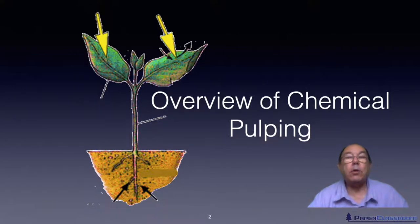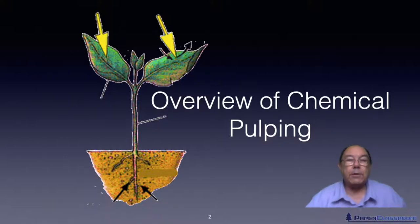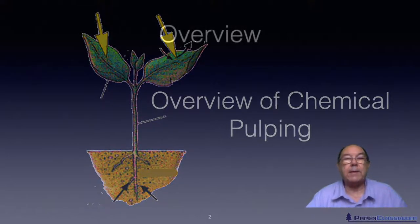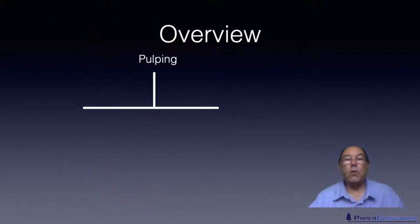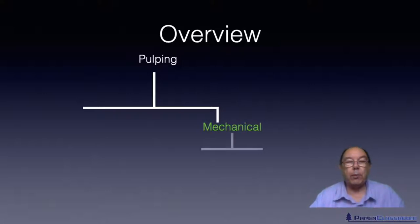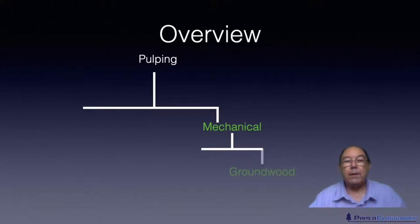Previously we did an overview of mechanical pulping, so I'm going to start off in the same way with a simple diagrammatic tree of all the pulping processes so that you can see where chemical pulping really fits in. There is more than one type of pulping — mechanical is one type, and mechanical itself can be divided up into two types.